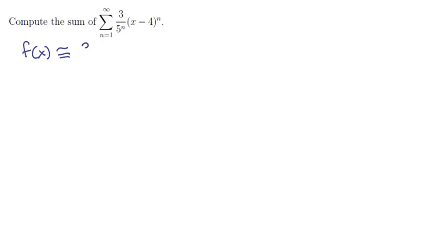So if we plug in n equals 1, we would have 3/5 times (x minus 4), plus 3 over 5 squared times (x minus 4) quantity squared, plus 3 over 5 cubed times (x minus 4) to the third, and so on down the line. So what function has this Taylor series?